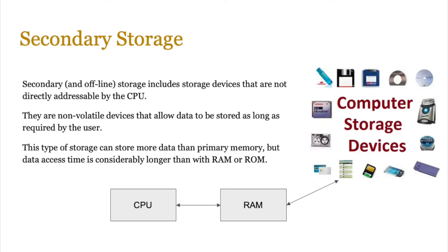So let's start with secondary storage. We looked at primary storage, and primary storage is directly accessible by the CPU. It can be volatile or non-volatile. Secondary storage and offline storage include storage devices that are not directly addressable by the CPU, so data from there needs to be loaded into RAM. They are non-volatile devices all the time, so data can be stored as long as required by the user.